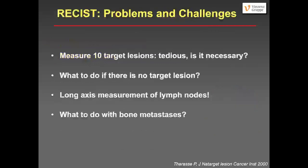What were problems with RECIST? If you have to measure ten target lesions each time the patient comes for a follow-up CT, this is quite tedious. The question arose whether it is really necessary to measure ten target lesions. What should I do if there are no target lesions at all, just non-measurable disease? In the initial RECIST proposal, lymph nodes should be measured in the long axis, but we know the long axis diameter is not very representative — we always measure the short axis. And how should bone metastases be handled? These were unsolved questions with RECIST version 2000.